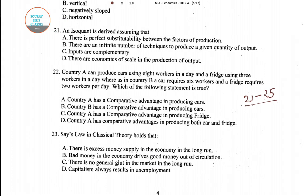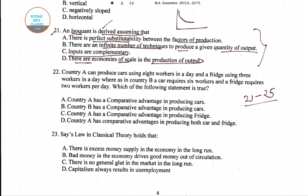In question number 21, it is asked: an isoquant is derived assuming — four options are given: perfect substitutability between factors of production; there are infinite number of techniques to produce a given quantity of output; inputs are complementary; there are economies of scale in production. The isoquant is derived assuming there are infinite number of techniques to produce a given quantity of output, so option B is the right answer.